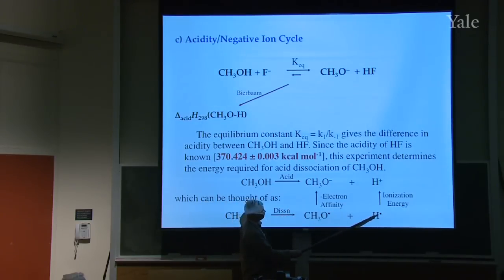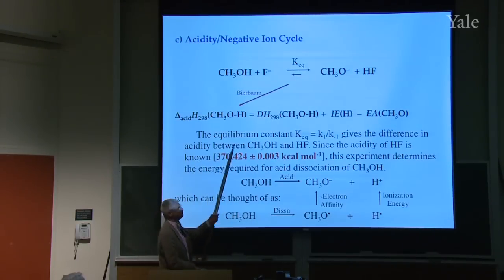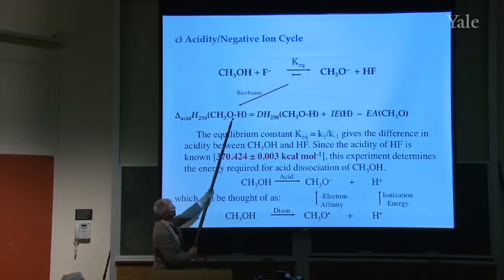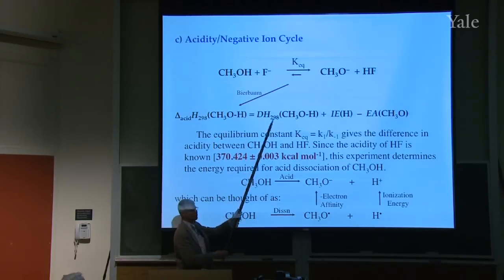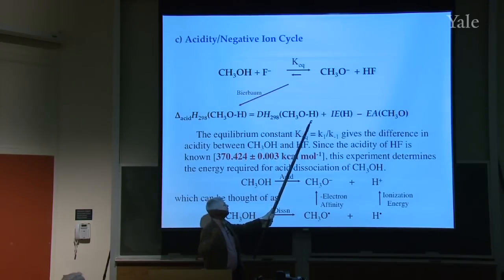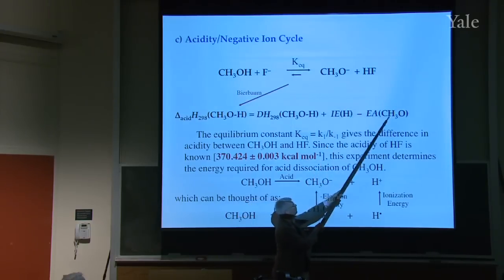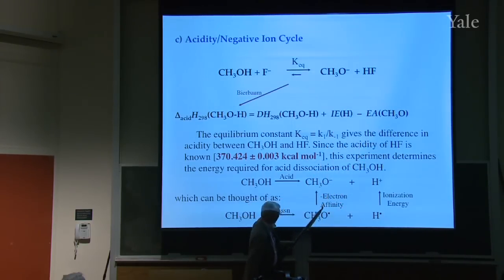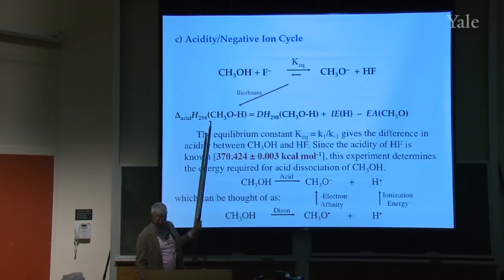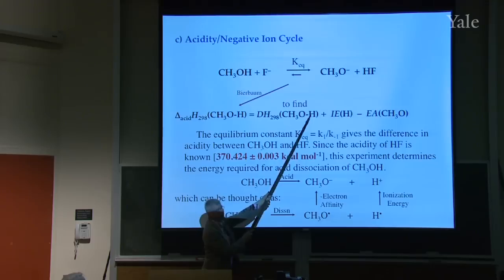That's this acidity. The first thing you've got to do is reach in with a pair of scissors and cut this bond — you've got to pay that energy. You've also got to give me the ionization energy of hydrogen atom, because that gives you the proton. Then you take the electron and put it back on the alkoxy radical — that's the electron affinity. So this is what we're after: we want this bond energy, and this will be the energy for that bond only.